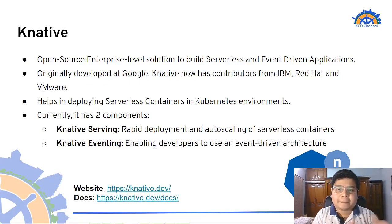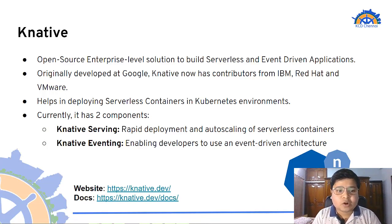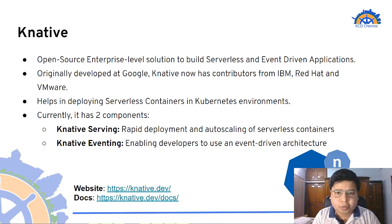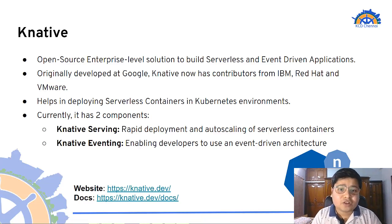Now let's look at one of the applications we'll use in the demonstration: Knative. Knative is an open-source enterprise-level solution for building serverless and event-driven applications, originally developed by Google. It now has contributors from IBM, Red Hat, and VMware. The main purpose of Knative is to deploy serverless containers on top of Kubernetes. It has two components: Knative Serving, responsible for rapid deployment and autoscaling of serverless containers, and Knative Eventing, which enables developers to set up event-driven architectures.